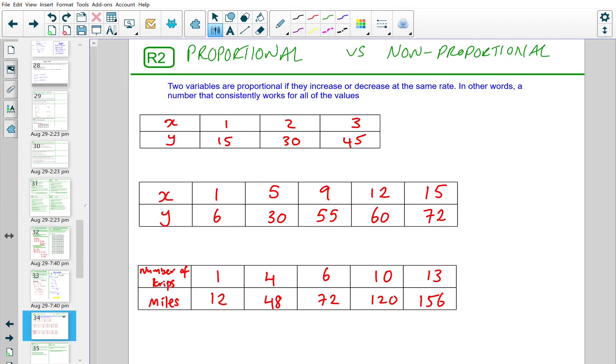Moving on to R2. Now, this is very similar to the concept work that we've done on C1, C2 on the very first video. How do we decide whether a table of values is proportional or non-proportional? We came up with the sentence at the end of the C2. Two variables are proportional if they increase or decrease at the same rate. If that number that you multiply by them is constant. In other words, a number that consistently works for all of the values.